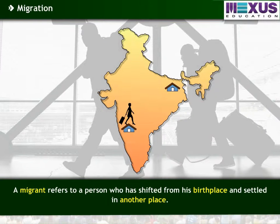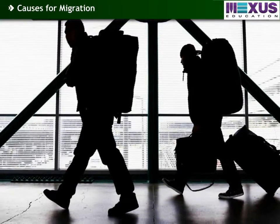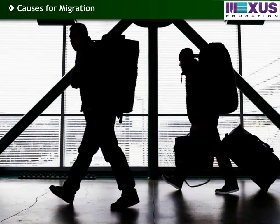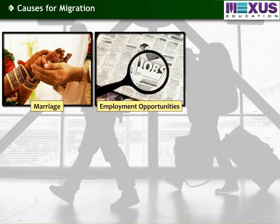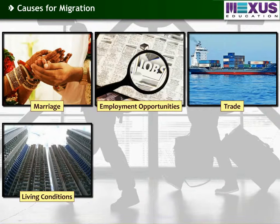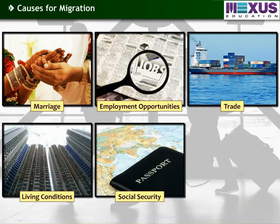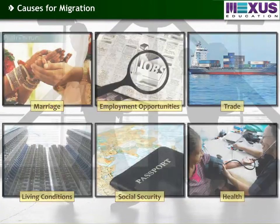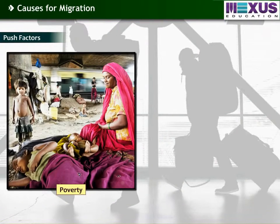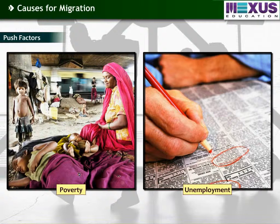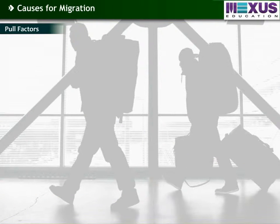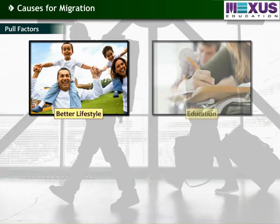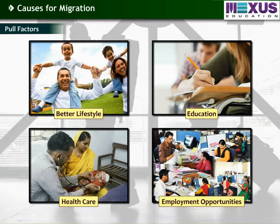A migrant refers to a person who has shifted from his birthplace and settled in another place. People migrate to different places for various reasons such as marriage, employment opportunities, trade, better living conditions, social security, and health. Push factors such as poverty and unemployment cause people to leave their homes. Pull factors such as better lifestyle, education, health care, and employment opportunities cause people to move to better areas.